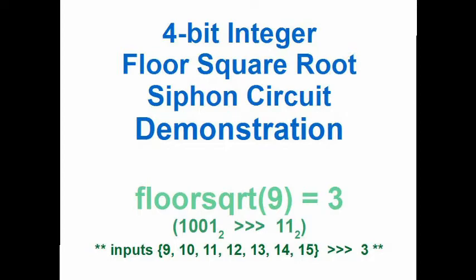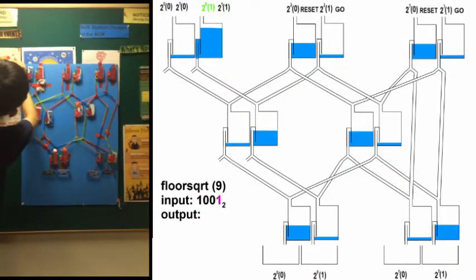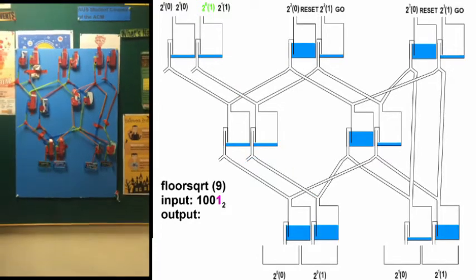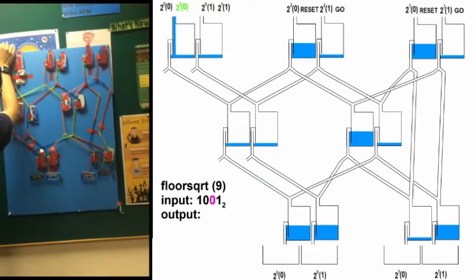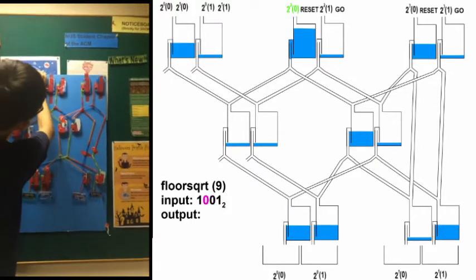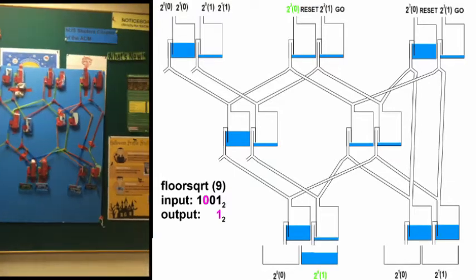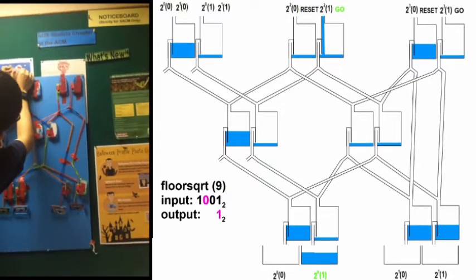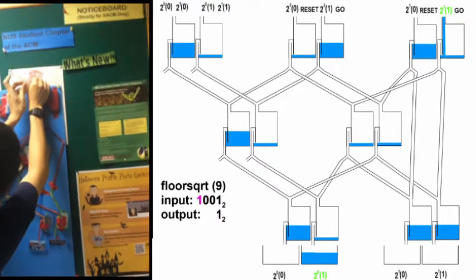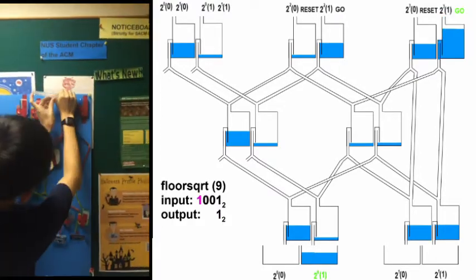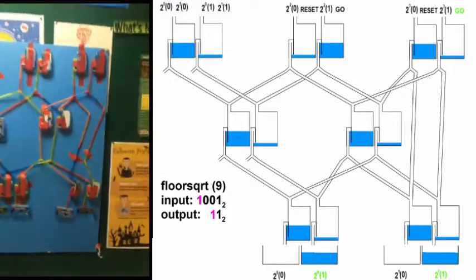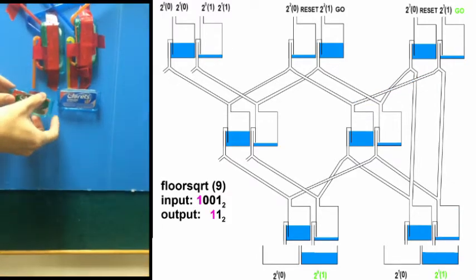In the final demonstration, we will compute the square root of 9. In binary, 1 in the 1's place, 0 in the 2's place, 0 in the 4's place, and 1 in the 8's place. The 2's place is 0, so we activate the corresponding gate. The 1's place is 1, input accordingly. The 4's place is 0, input accordingly. Input GO for calibration. The 8's place is 1, input accordingly. The 1's place of the answer is 1.